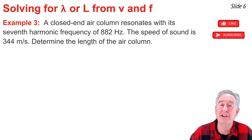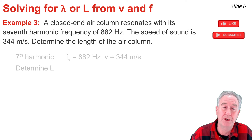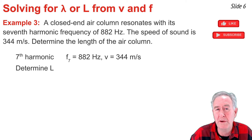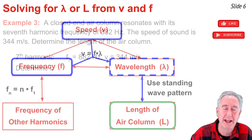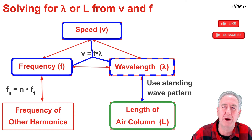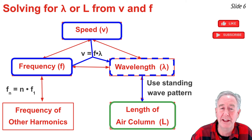In Example 3, I have the 7th harmonic of a closed-end air column with F7 = 882 Hz and speed of sound = 344 m/s, and I need to find the length of the air column. Using the graphic organizer, I note that knowing frequency and speed, I'll first calculate the wavelength of the 7th harmonic, then use the standing wave pattern to find the length. The wavelength is λ7 = v ÷ F7 = 344 ÷ 882 ≈ 0.390 m (keeping the unrounded value for the next step).